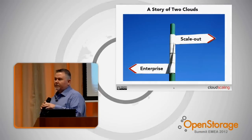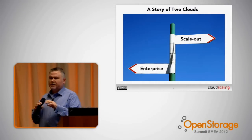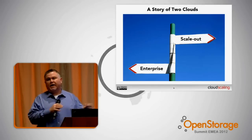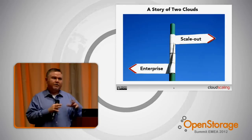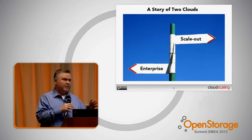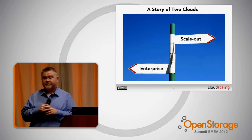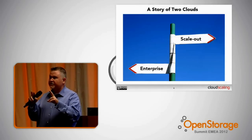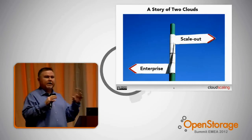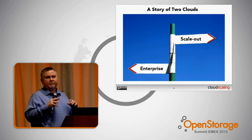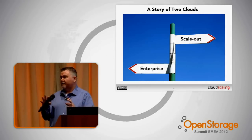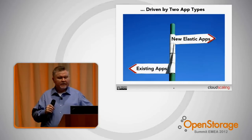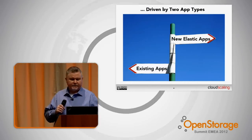If you look right now at the way people are building storage clouds, there are really two key approaches. There's the scale-out or elastic approach — the canonical example being Amazon Web Services. And then there's what I think of as the enterprise cloud or enterprise virtualization approach — more the VMware vBlock, VCE vBlock, VMware-based kind of deployments. These are two very different kinds of architectures.